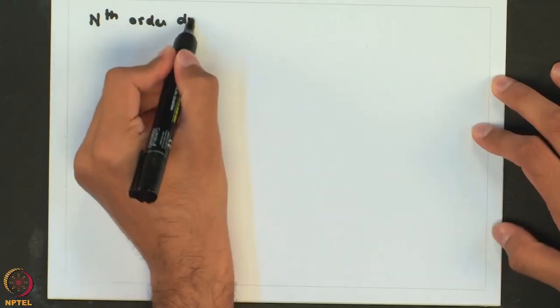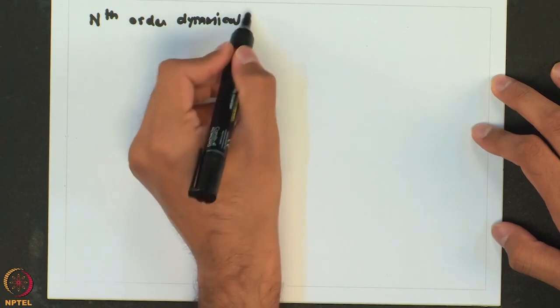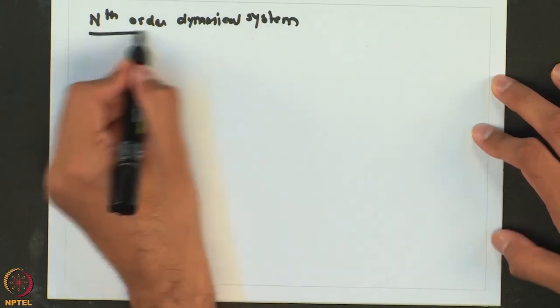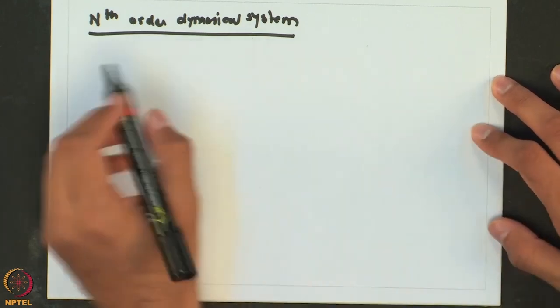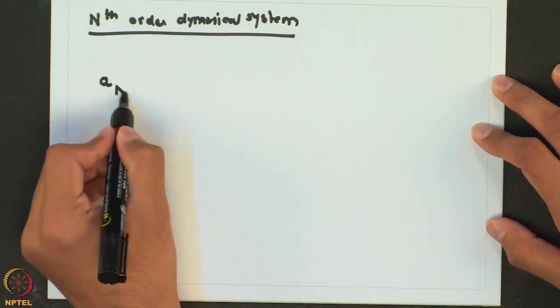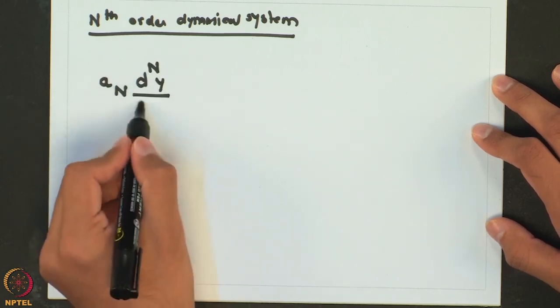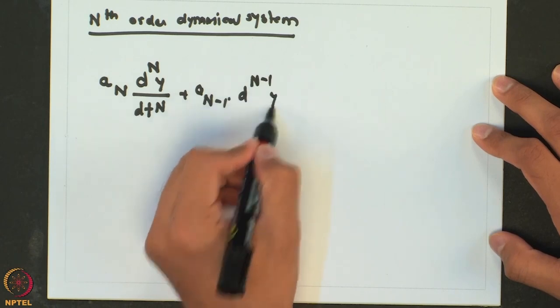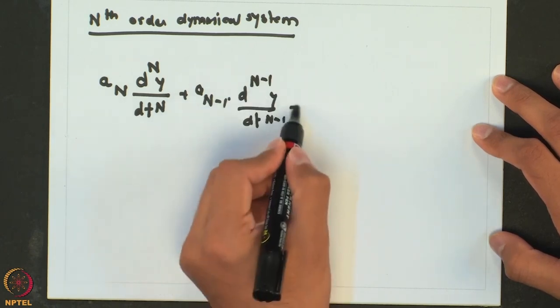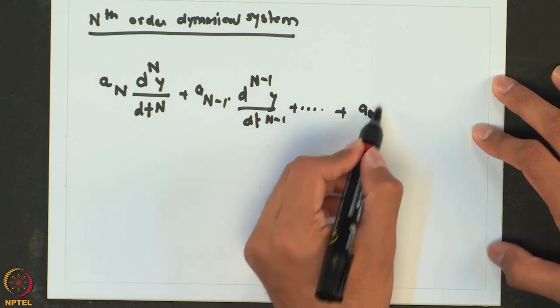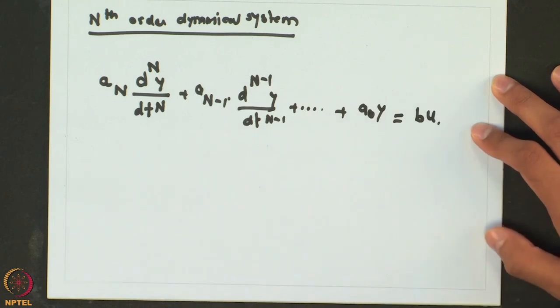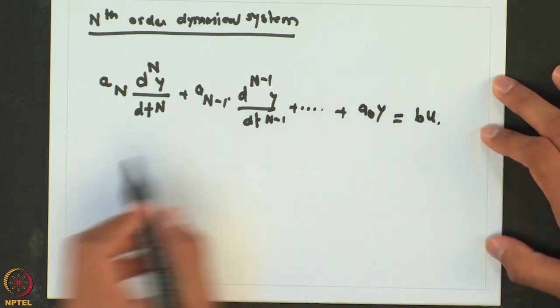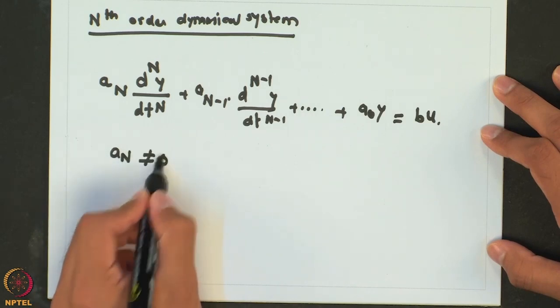We will define any higher order system or nth order dynamical system as an extension of how we have been defining a first order system or a second order system. It will be a system whose dynamics are given by an nth order ordinary differential equation. The general form will have u as the input and y as the output, and as it is an nth order system, n should not be equal to 0.